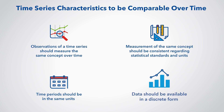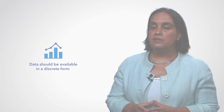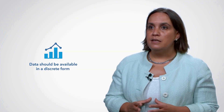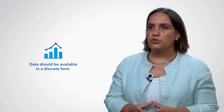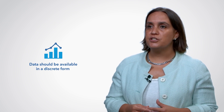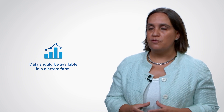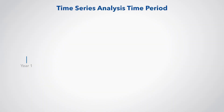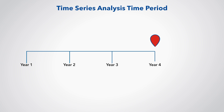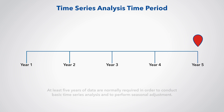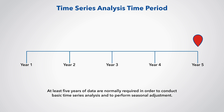Data should be available in a discrete form. For example, quarterly national accounts should be compiled and disseminated in quarterly discrete form. Cumulative data, such as year-to-date totals, do not constitute time series, since observations of a cumulative series cannot be compared because they measure periods of time with different lengths. For the effective use of a time series, the data should cover a sufficient number of periods — at least five years of data are normally required to conduct basic time series analyses and to perform seasonal adjustment.